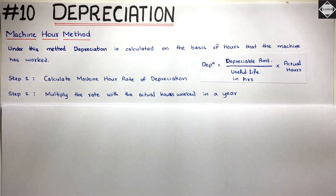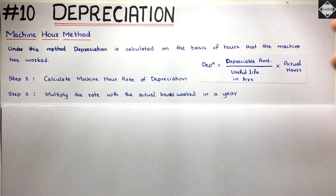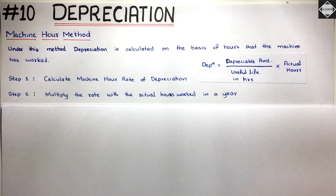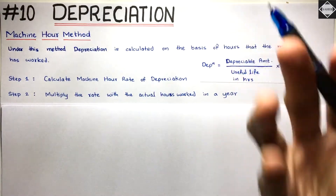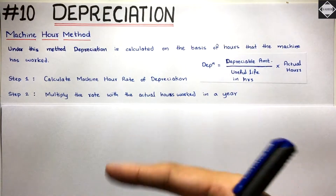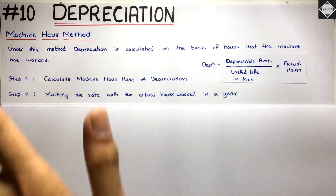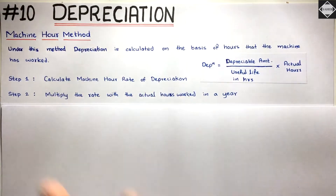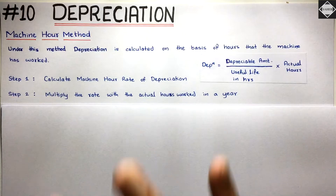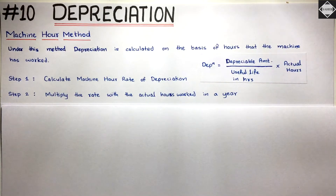So in the calculation: Step 1 — depreciable amount divided by useful life in hours gives the Machine Hour Rate. Step 2 — multiply the rate by the actual hours worked in the year to get the depreciation. The ICAI study material presents the same formula as: depreciable amount × actual hours ÷ useful life in hours — it's the same thing. Conceptually, we are not confining ourselves to years. We look at how many hours the machine can be used, and charge depreciation on that basis.